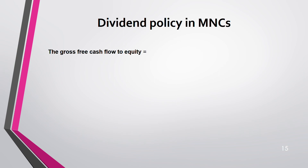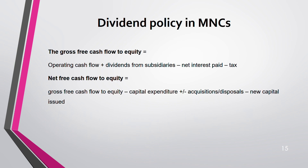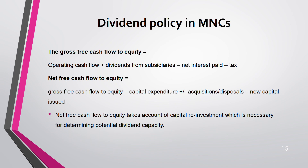Two important terms: gross free cash flow to equity equals operating cash flow plus dividends from subsidiaries minus net interest paid and tax. Net free cash flow to equity equals gross free cash flow to equity minus capital expenditure, plus or minus acquisitions and disposals, minus any new capital. Net free cash flow to equity accounts for capital reinvestment and is used to determine dividend capacity.